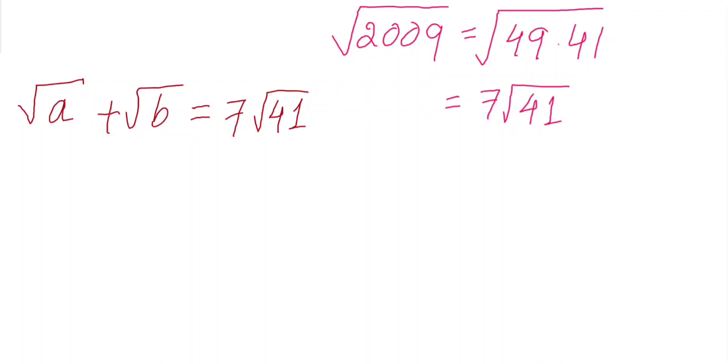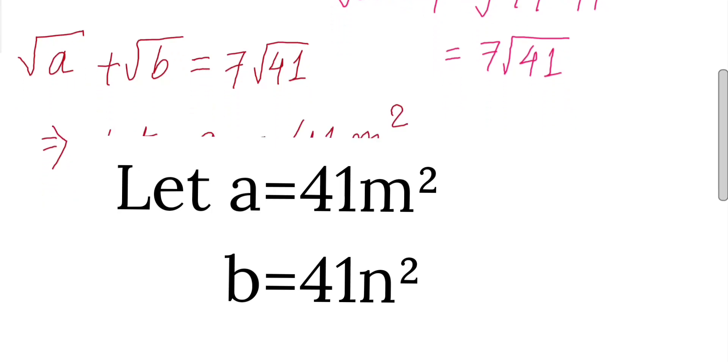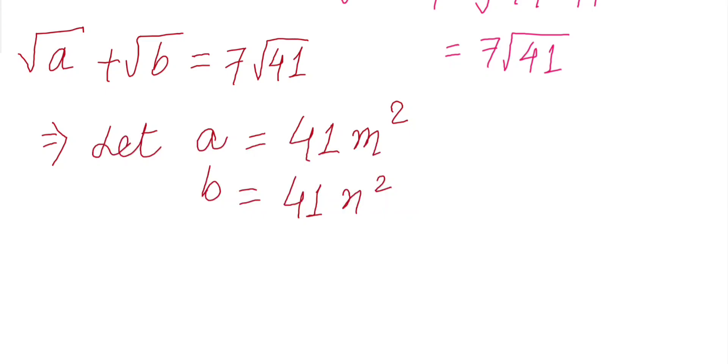Now, let a equals 41m² and b equals 41n², and substitute it into our original question. Let's see then what happens.